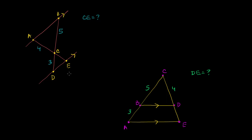The first thing that might jump out at you is that this angle and this angle are vertical angles, so they are going to be congruent. The other thing is that angle CDE is an alternate interior angle with CBA. These are alternate interior angles and they are going to be congruent.